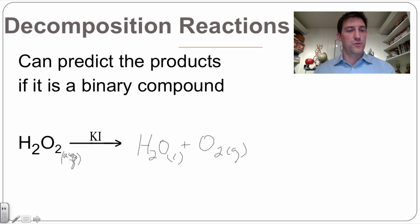This KI here, this is potassium iodide. This is our catalyst that gets the reaction to happen very quickly, which you're going to see next.